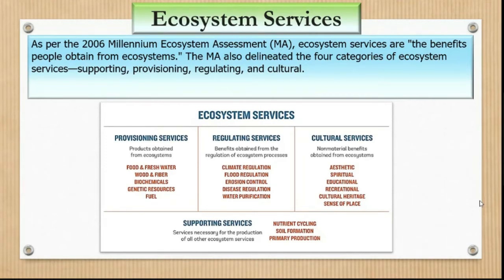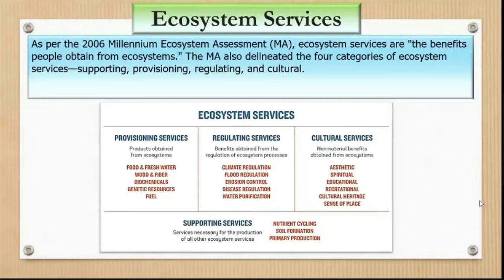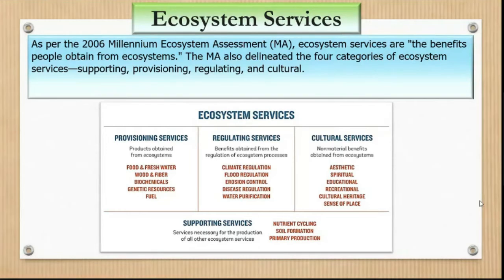Soil formation is another key supporting service — just five centimeters of topsoil takes around 1,000 years to form through complex biological, chemical, and physical weathering processes. Without soil formation, plants cannot grow. Primary production is also a basic ecosystem function, where plants capture sunlight and transform it into biomass that transfers through trophic structures. Without photosynthesis, the ecosystem will collapse within a short period.